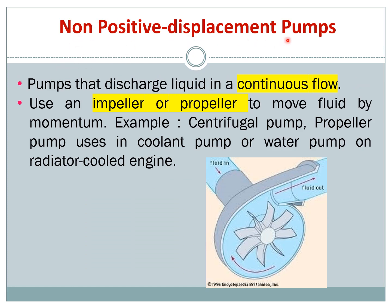The non-positive displacement pump is a very common hydraulic pump. The pump discharges liquid into a continuous flow. Looking at the picture, the fluid is coming in and you have a propeller or impeller to change the direction and send it to another place. By creating this flow the pressure will increase and it will be sent to various parts of the hydraulic system. It uses the impeller or propeller to move fluid by momentum. Some examples are centrifugal pump, propeller pump, coolant pump, or water pump on the radiator to cool the engine.